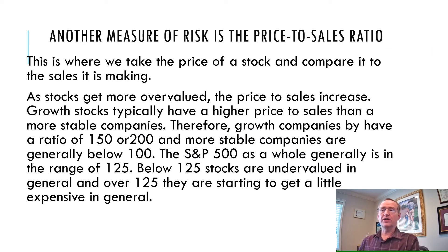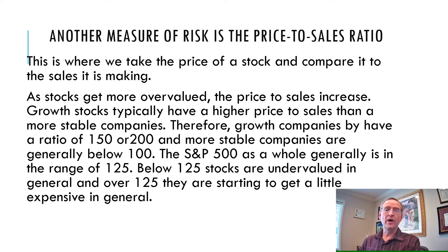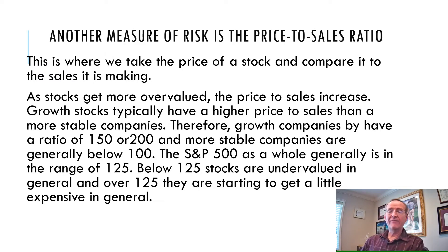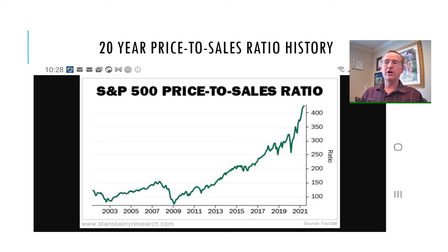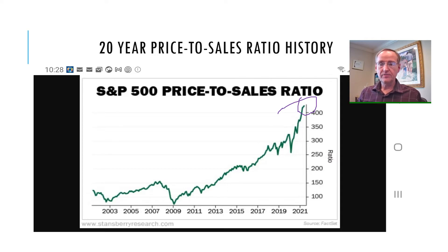Another way we can measure risk is the price-to-sales ratio. You take the price of a stock and compare it to its sales. Typically, most growth stocks are in the range of 150 to 200, some maybe up to 300 if they're really fast growers. An average solid stock like a GM or Toyota Motors will be below one. Looking at the S&P 500 — taking all the stocks, averaging them out — we're sitting above 400, like 450. That's the highest it's ever been in history for price-to-sales ratio.